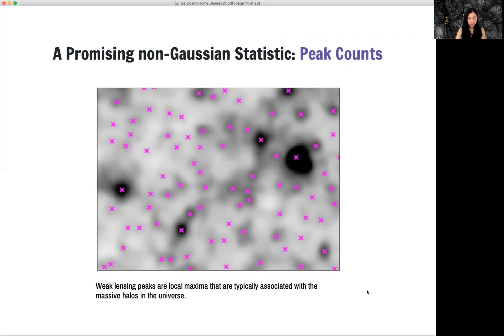One promising statistic is called peak counts. So the idea of peak counts is to scan through every single pixel in our map and identify the ones with higher value that is surrounding pixels.